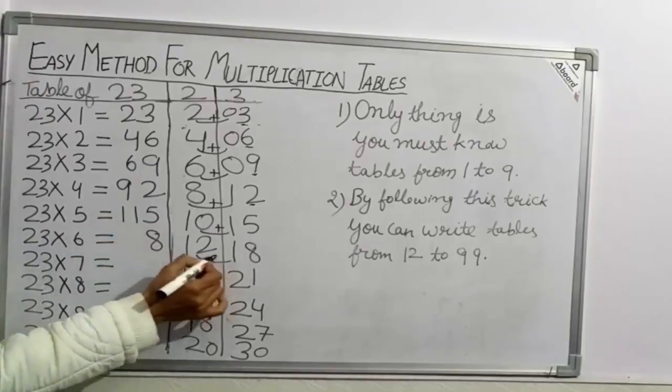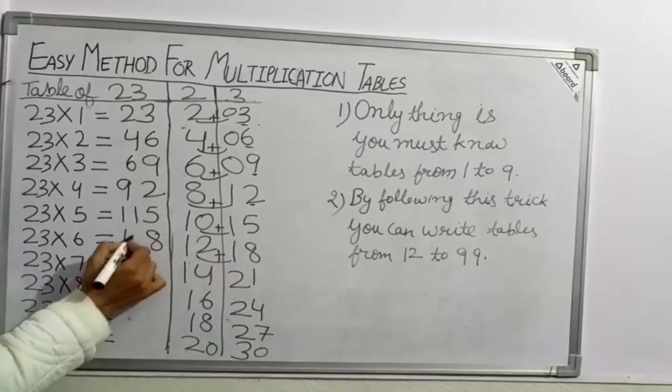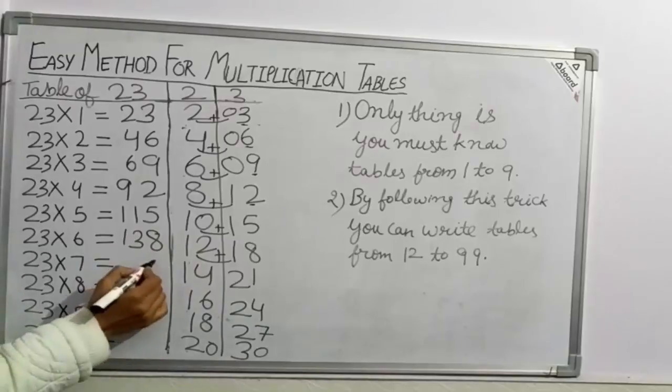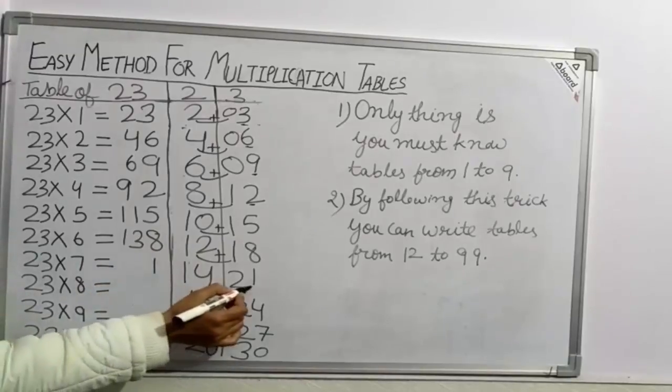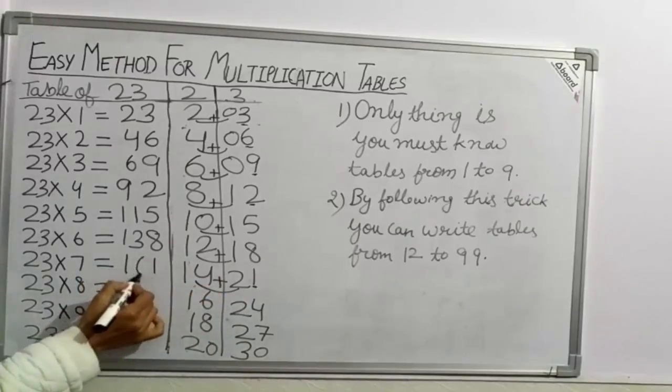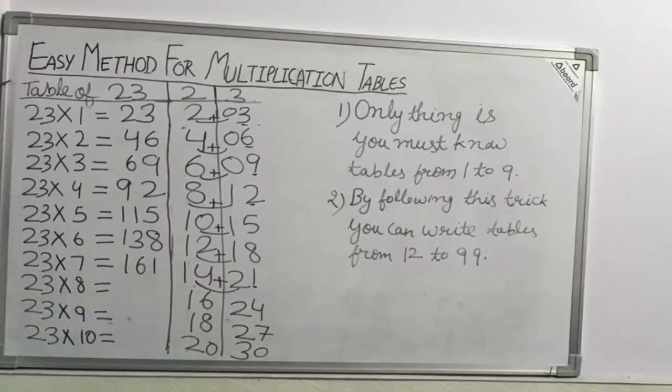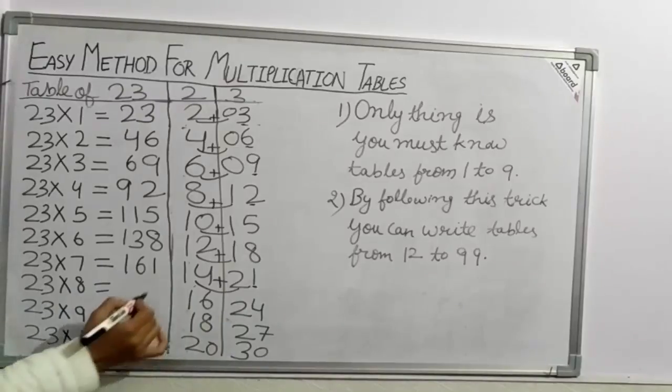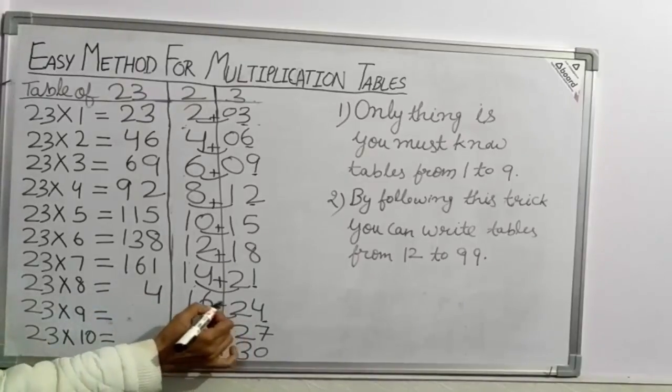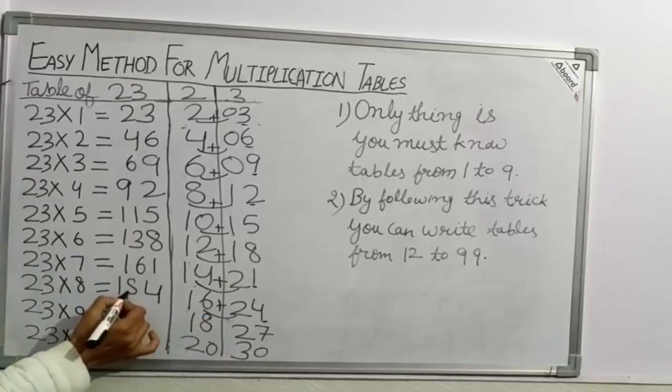8. 12 plus 1, 12 plus 1 is 13. 23×6 = 138. Now 1, unit place of table 3 as it is. 14 plus 2 is 16. 23×7 = 161. Now take 4 as it is. And 16 plus 2 is 18. 23×8 = 184.